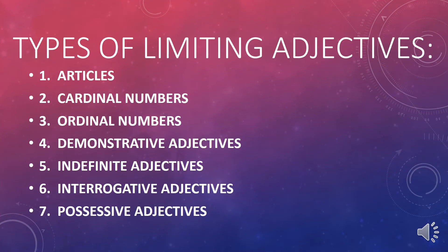There are seven types of limiting adjectives: articles, cardinal numbers, ordinal numbers, demonstrative adjectives, indefinite adjectives, interrogative, and possessive adjectives.